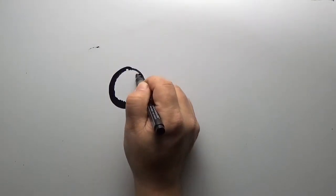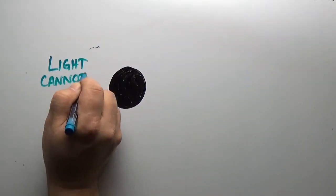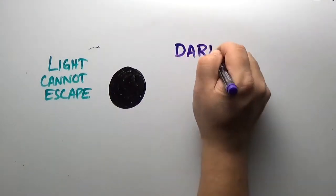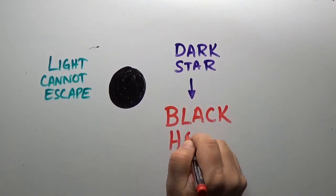If the escape speed is the speed of light, then light cannot escape. The object would not shine. John Mitchell called these objects dark stars, which today we call black holes.